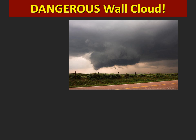Remember that although wall clouds are important, they don't mean a tornado is guaranteed to happen. Many storms produce wall clouds, and nearly all supercells produce wall clouds, but very few storms ever produce a tornado. As a storm spotter, your key is to be patient and observant and monitor the wall cloud for changes over time. These are some of the signs that a wall cloud could be about to produce a tornado.